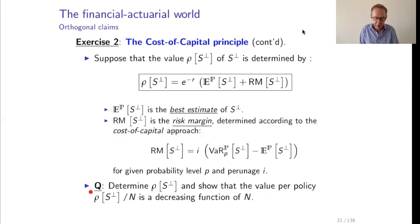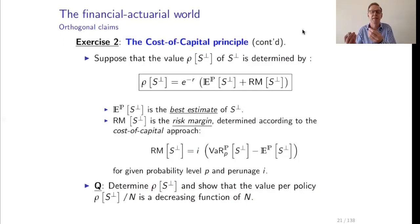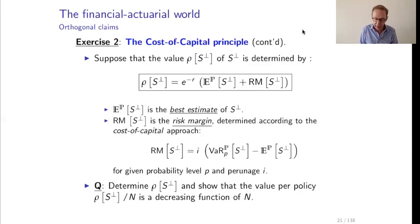The question now is: let us determine the value of S-orthogonal, the portfolio liability, and show that the value per policy rho of S-orthogonal divided by N is a decreasing function of N. We have N independent, identically distributed policies. We price the whole liability, divide it by the number of policyholders, and everyone pays 1/N of rho of S-orthogonal. This is a decreasing function of N — the larger the group of insurers, the lower the premium for the same probability level.